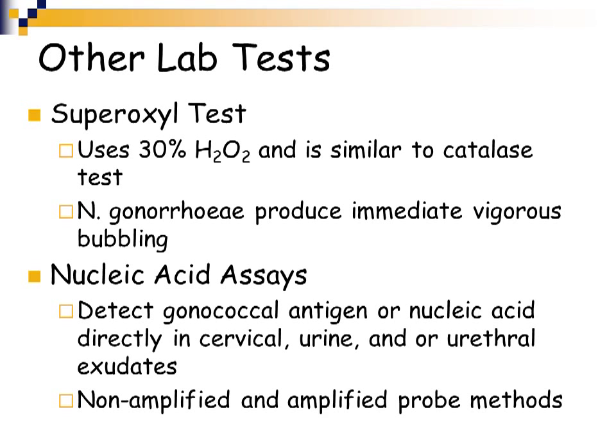Another lab test is the superoxal test, which is similar to the catalase test but uses 30% hydrogen peroxide (versus the 3% used in the catalase test). Neisseria gonorrhoeae produces a very vigorous, immediate bubbling response when hit with 30% hydrogen peroxide. You can also perform molecular-based nucleic acid tests, detecting the gonococcal antigen or nucleic acid directly in cervical, urine, or urethral exudates, using both non-amplified and amplified probe methodologies.